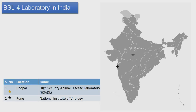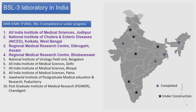There are two BSL-4 facilities recognized by DHR in India: the National Institute of Virology in Pune, and the High Security Animal Disease Laboratory in Bhopal. Among BSL-3 laboratories recognized by DHR, AIIMS Jodhpur is one that has been completed. NICD Kolkata, RMRC Dibrugarh, and RMRC Bhubaneswar are also validated by DHR and functional. The remaining laboratories are either in the construction phase or in the validation phase.